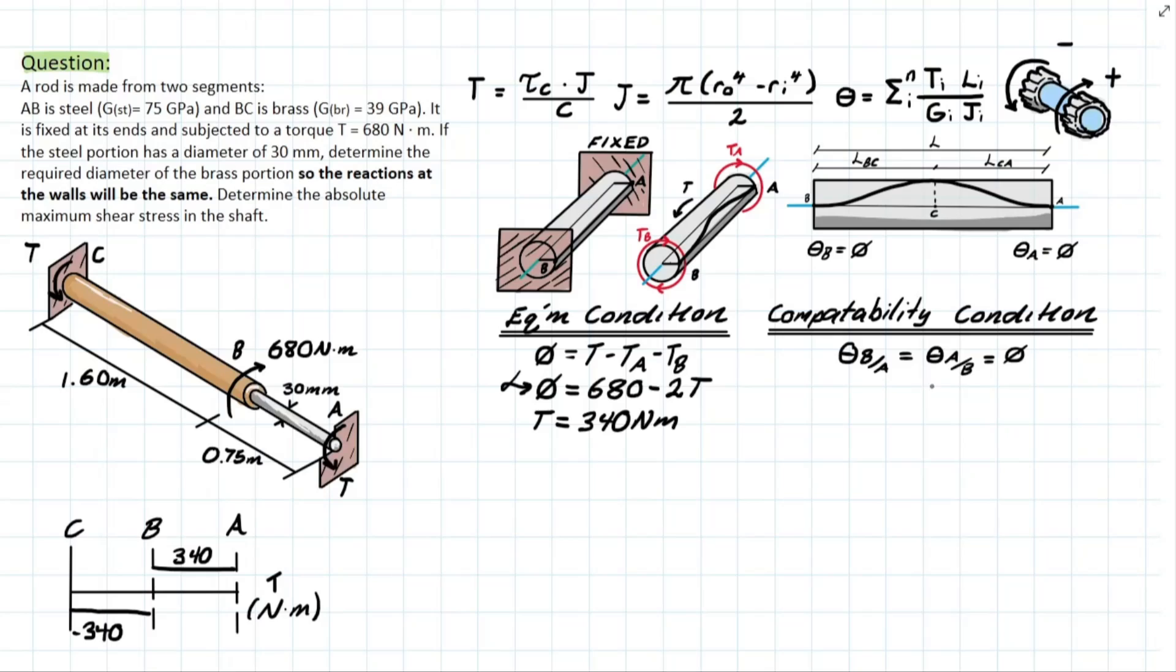Now how can we use this in our case? Well if we worked from one end to the other, C to A, we're going to have a very similar situation where theta C with respect to A or theta A with respect to C is going to come back to equal to zero. But how can we use this information? Well we know what our angle of twist formula is which is right here, and we understand that there's two different members here except one of them we have an unknown diameter. So that means we're going to be using this formula working along the length of the member in order to determine that single unknown which is the diameter of the brass.